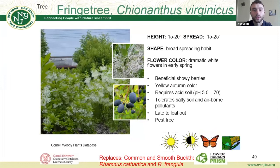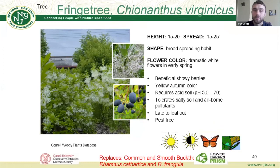Fringe tree is another smaller native tree with really showy white flowers and showy blue berries. It is pest-free, can grow in full sun or part shade, and attracts pollinators.